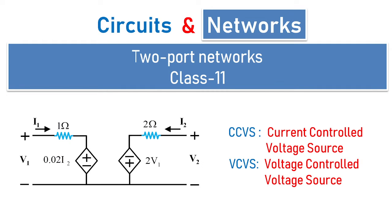Welcome to another session of circuits and networks. In today's class 11 under two-port networks, we are going to see a special problem related to current controlled voltage source as well as voltage controlled voltage source. The input port is connected to v1 and current i1 is flowing through 1 ohm into the dependent source, which is controlled by the output port — hence it is a current controlled voltage source.